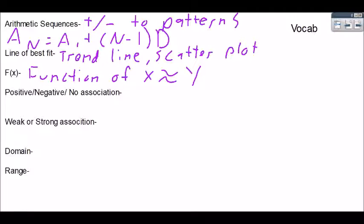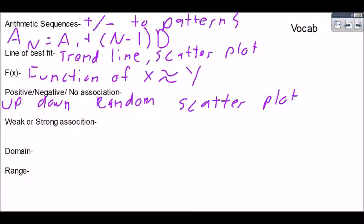Positive negative and no association, that's in reference to scatterplots and it's saying does the line go up, does the line go down, or is there no line at all and it's random? Weak or strong associations is saying I draw a trend line through my data. Will my trend line predict it super close or is there an iffy chance if we get it?